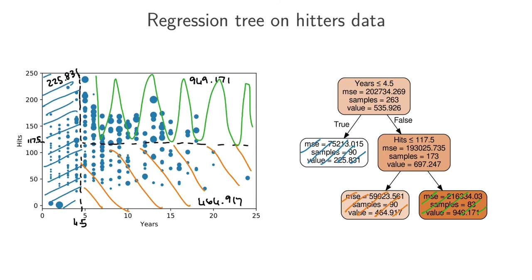One benefit of these models compared to some others is that we can actually see how they make decisions. In this example you can clearly see how the model decides what a player's salary should be based on years and hits. This makes intuitive sense: players who haven't been playing many years get a relatively low salary; more experienced players earn more, though that also depends on how many hits they've made — experienced players with fewer hits land in the middle block, while experienced players with many hits get the highest salaries.